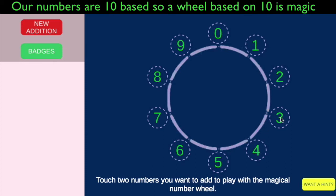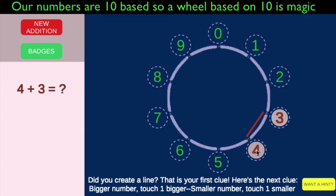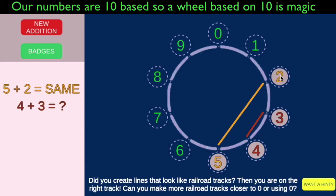Let's add three and four. There's a line. It says, did you create a line? That's the first clue. Here's the next clue: a bigger number, one bigger. The four is the bigger of three and four, so we touch five. And then the smaller number, touch one smaller. Three is the smaller number, we touch one smaller. And look at that — we get a railroad track.